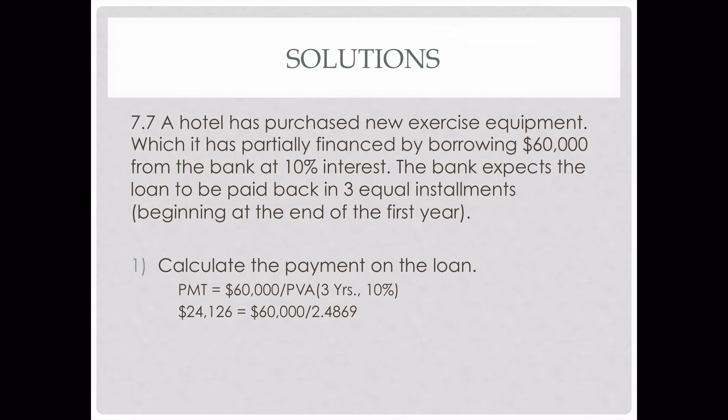On 7.7, we need to go ahead and develop an amortization table. There is an example of an amortization table on page 214 of your text, and there was one also in the lecture for chapter 7. We need to calculate the payment before we can do an amortization table, and this loan was for $6,000.